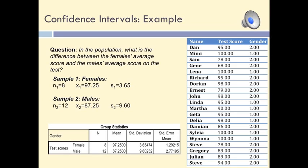We can already see from the descriptive results that the mean for females is 10 points higher than the mean for males. However, if we selected another two random samples of females and males, the numbers would be slightly different. Therefore, instead of providing just one difference, we must compute a confidence interval for this difference.